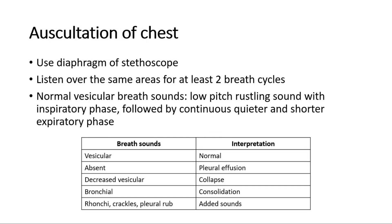Next, and lastly, we do auscultation of the chest, using the diaphragm of the stethoscope. Listen over the same areas as percussion for at least 2 breath cycles — first the anterior chest wall, then the posterior chest wall. The normal breath sounds are vesicular breath sounds, characterized by low-pitched, rustling sound during the inspiratory phase, followed by a continuous, quieter, and shorter expiratory phase. Absence of breath sounds could be due to pleural effusion. Decreased vesicular breath sounds may indicate lung collapse.